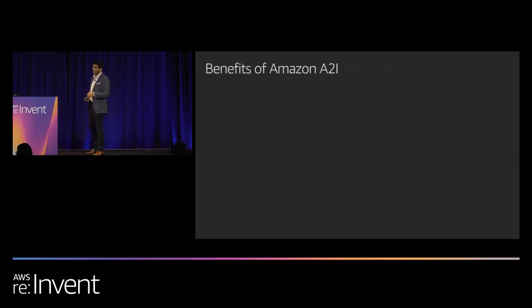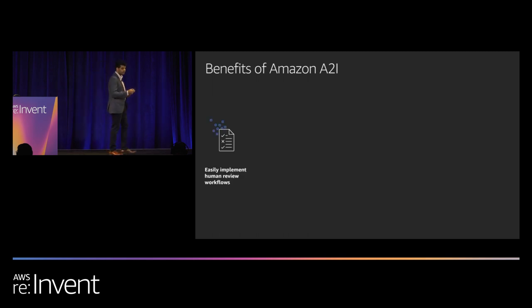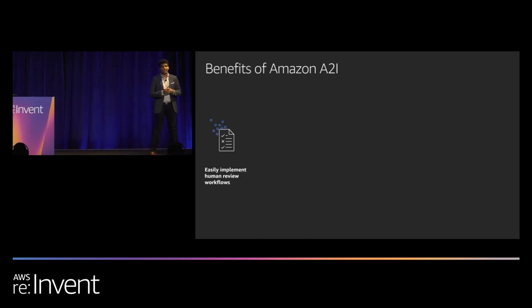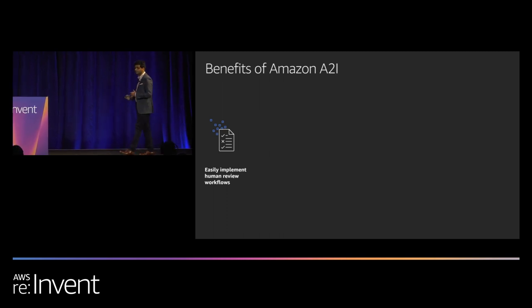We heard this feedback from customers and launched Amazon Augmented AI, a new service launched this week. With Amazon Augmented AI, you can easily implement human review in your machine learning workflows. It takes the undifferentiated heavy lifting away from developers and provides a simple mechanism to loop in human review in any ML application or workflow as needed. This saves a lot of developer and business time to focus on the actual business problem rather than on infrastructure.